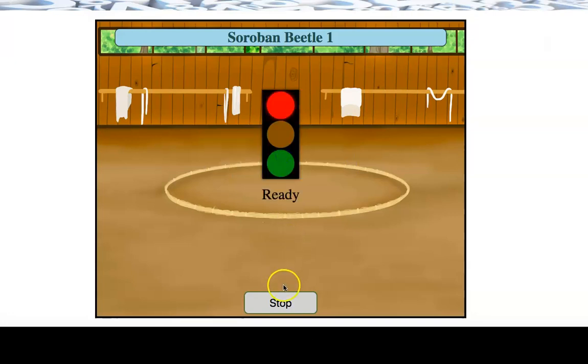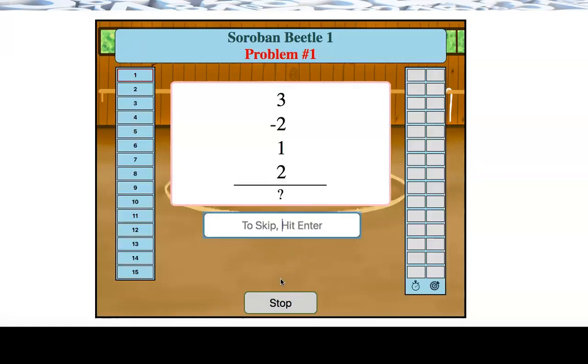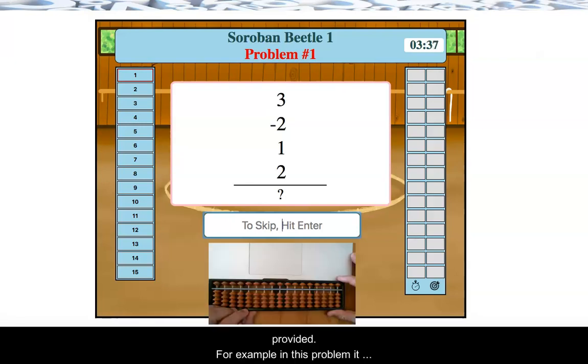So clicking start, I can see that I'm presented with a problem set of 15 problems, and I have a certain time frame in which to complete those problems. What we want students to do is to work out these problems on their physical abacus and then simply enter the answer into the box provided. For example, in this problem, it first asks me to add 3. So I place 3 on my abacus, then I need to minus 2, then add 1, and finally add 2 for a final answer of 4.